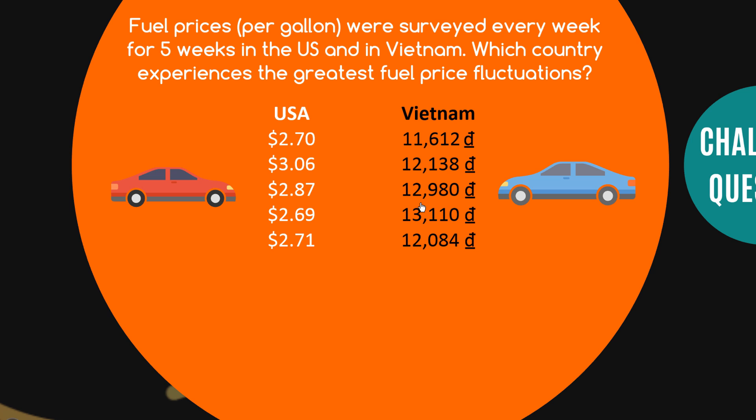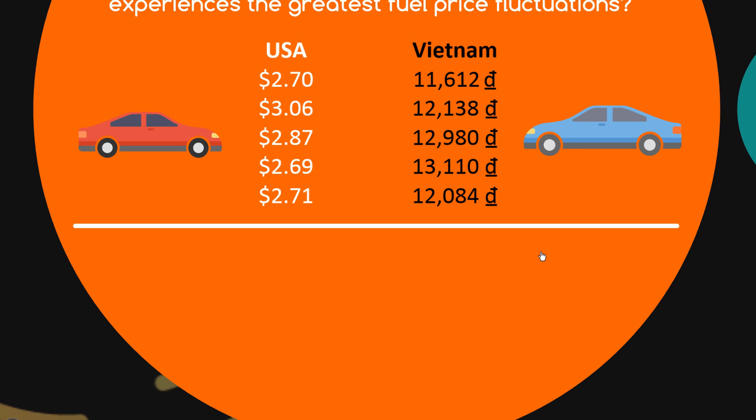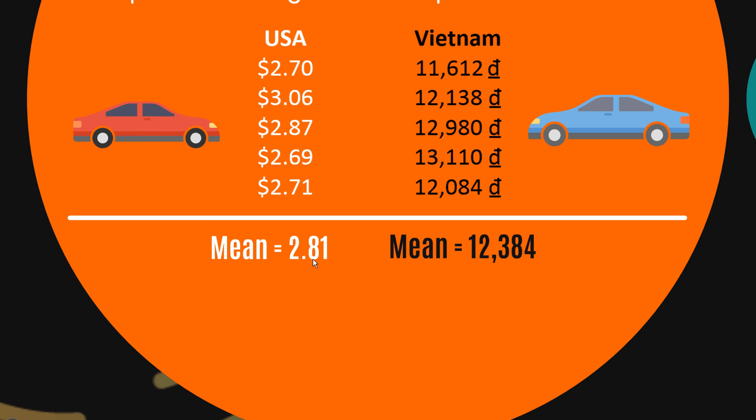So if we were just to straight compare the means, 2.81 for USA and 12,384 for Vietnam, and standard deviations which happens to be 0.16 for USA and 638.1, if you just looked at those standard deviations you'd think that fuel prices in Vietnam have a much higher variation than fuel prices in the USA. But of course it's to do with the scale of the data set itself.